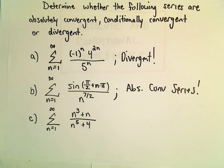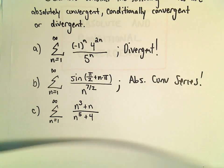So we've got the series n equals 1 to infinity, n cubed plus n over n to the 5th plus 4.